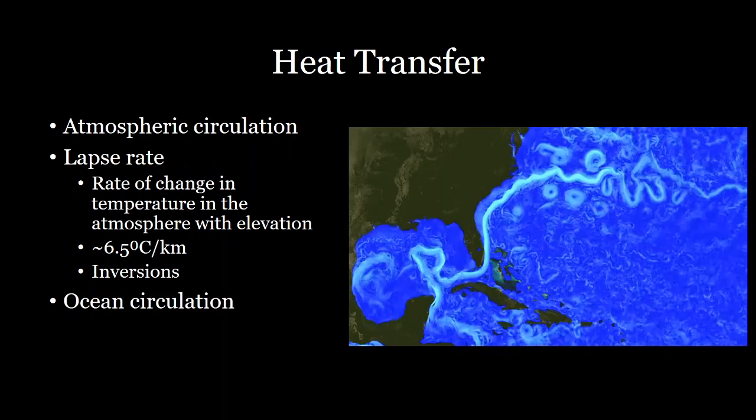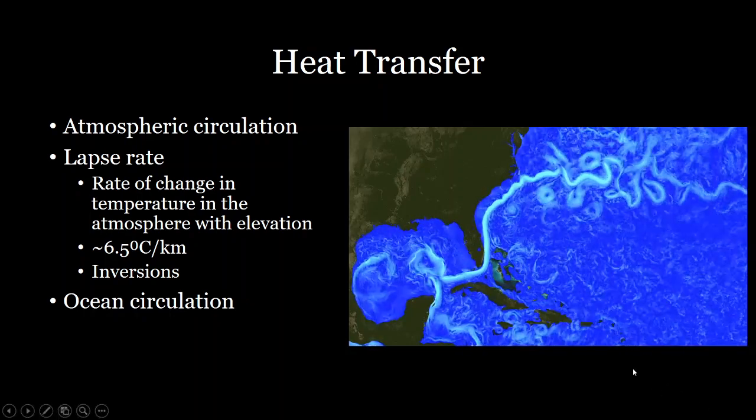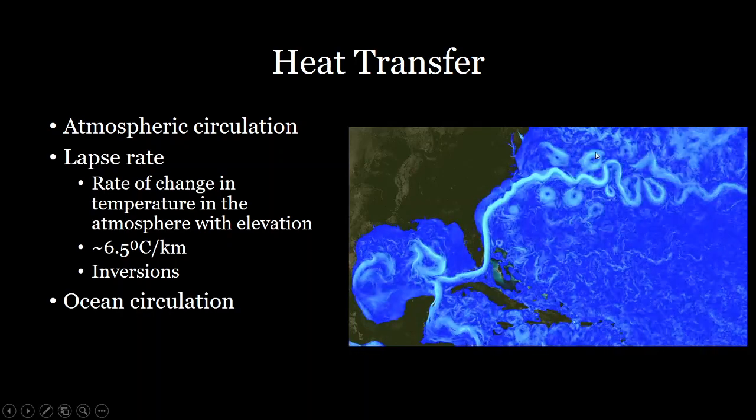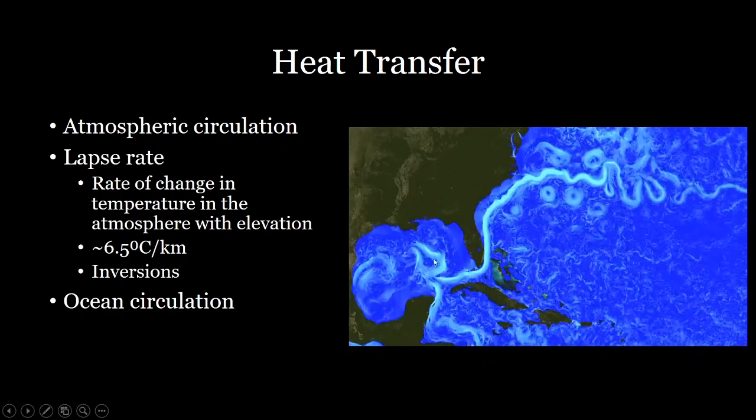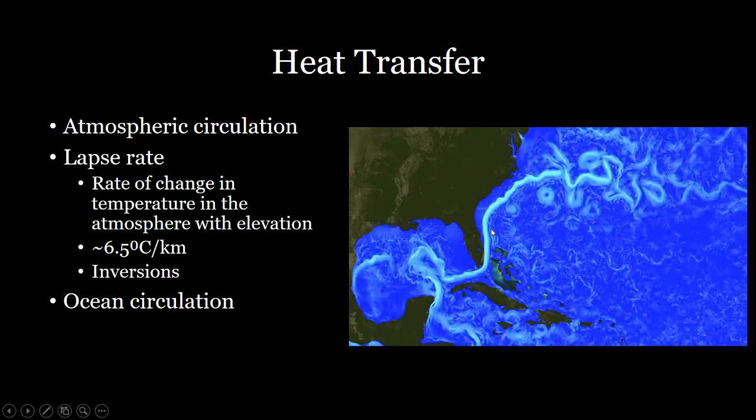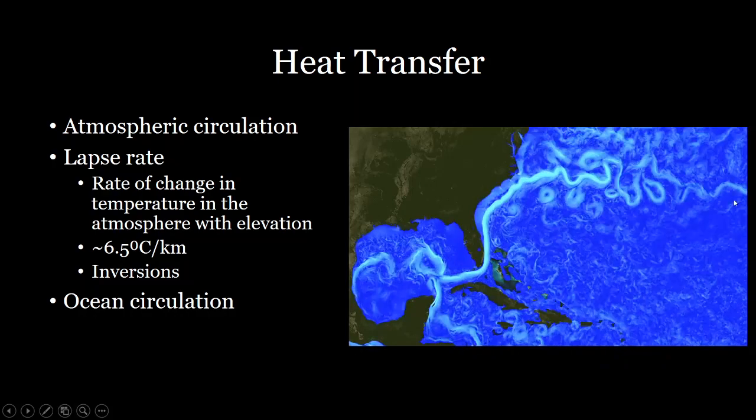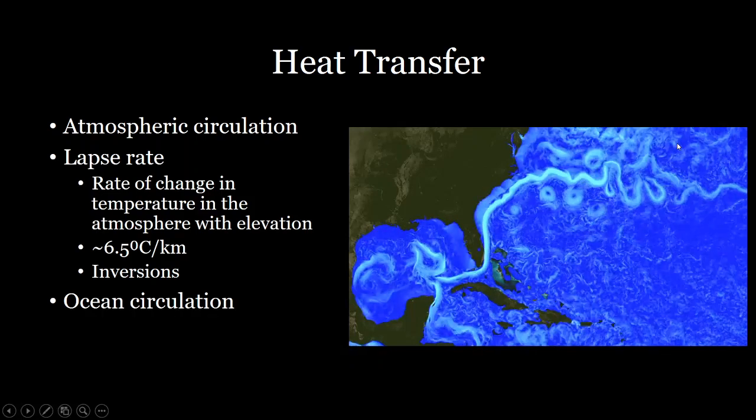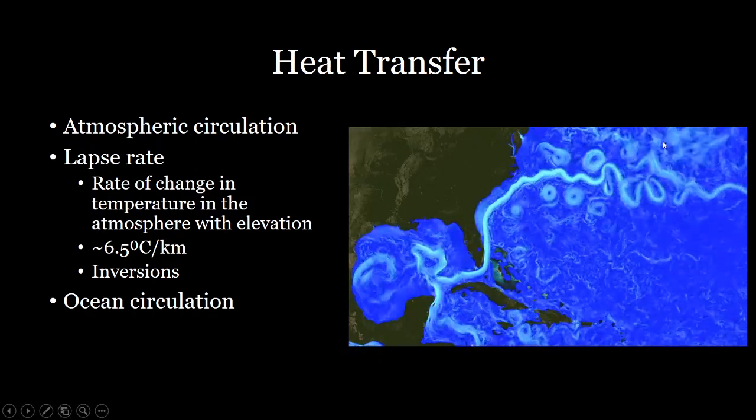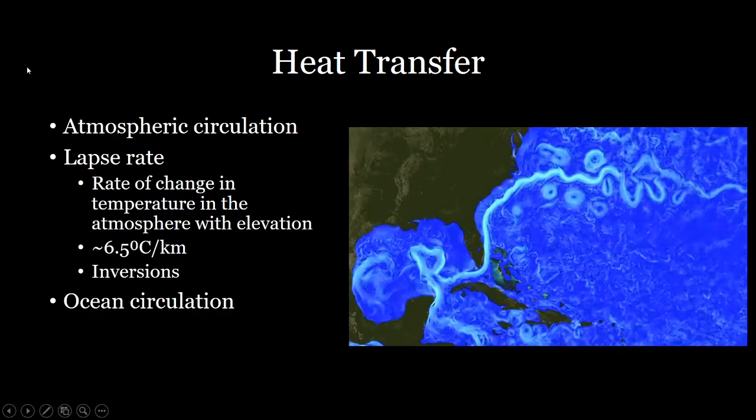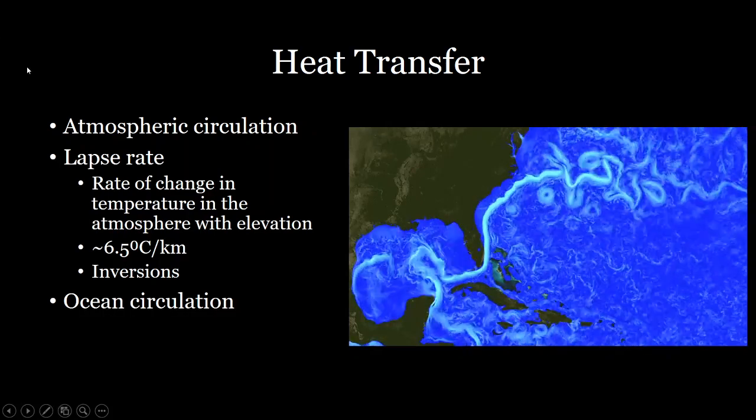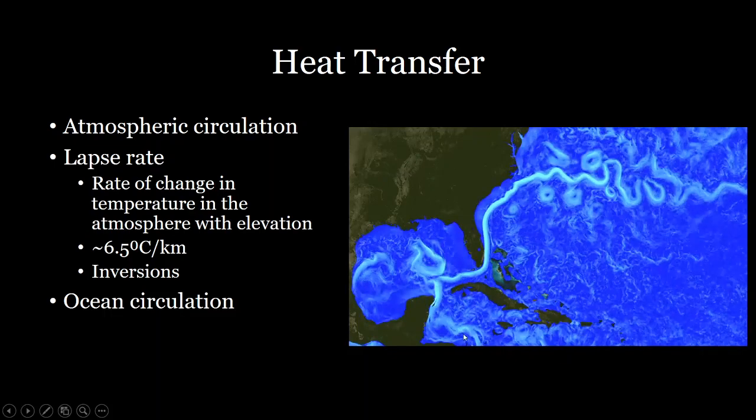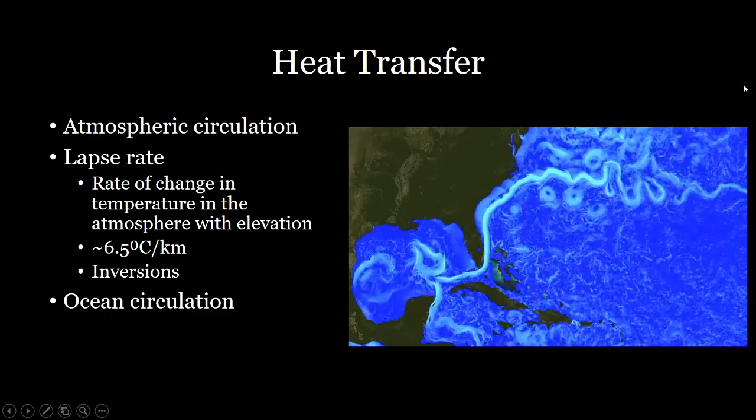Another way that heat is transferred throughout the planet is ocean circulation. So you can see here ocean circulation occurring on the Gulf stream, which moves water from the Gulf of Mexico all the way up the Eastern seaboard and eventually to Western Europe. And it's the reason why Western Europe tends to have significantly warmer temperatures than its counterpart in say Alaska, which is a very similar latitude because that heat is being transferred from the tropics here, the Caribbean up into those higher latitudes.